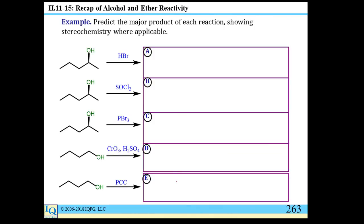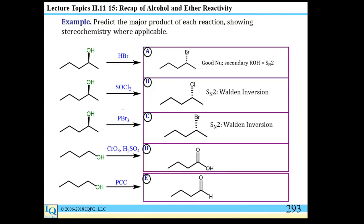You should also review oxidizing agents — PCC, PDC, or Swern oxidation — as ways to make carboxylic acids or aldehydes from alcohols. Sulfonate chlorides (mesyl chloride, tosyl chloride, chlorotriflate) with or without pyridine all form the same type of product: they make the OH into a good leaving group without reacting at the carbon, so there is no inversion of stereochemistry at that carbon.